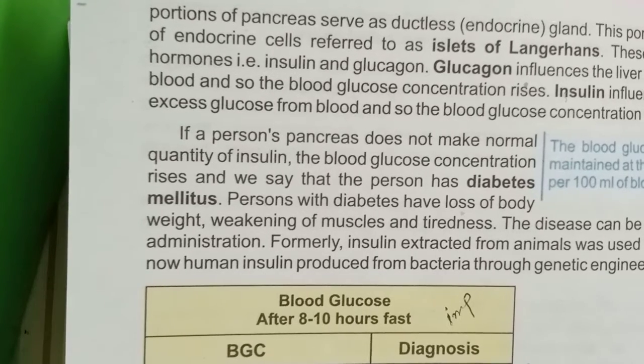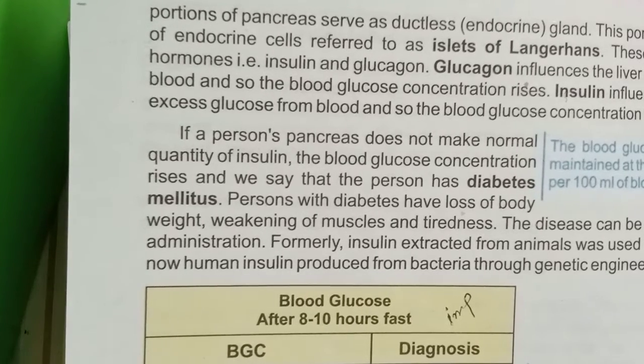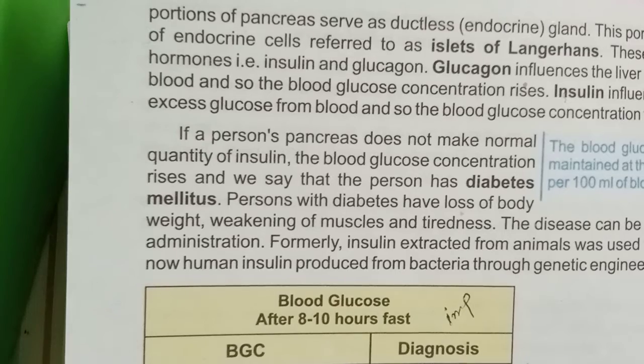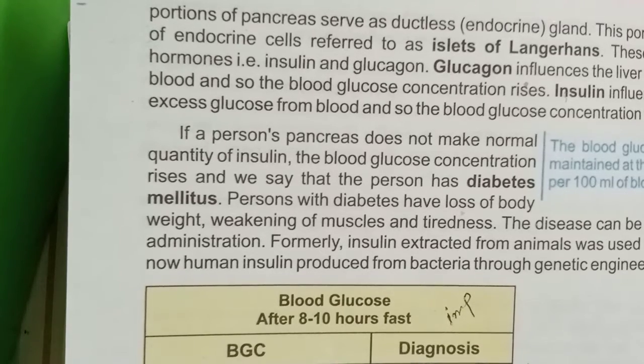What is the function of glucagon? Glucagon affects the liver to release glucose into the blood, increasing the blood glucose concentration level.